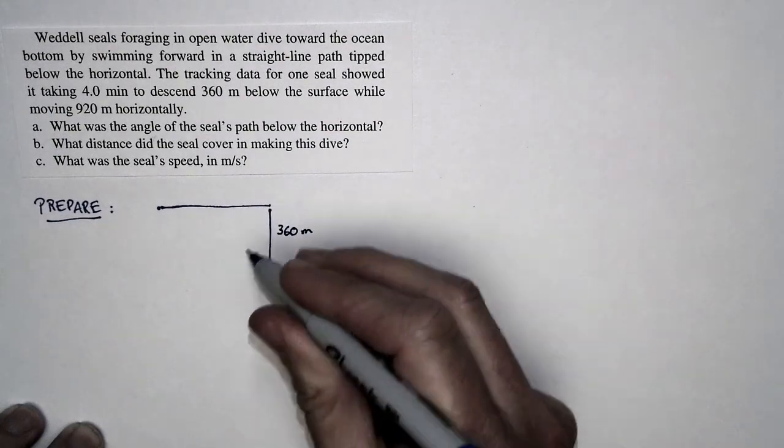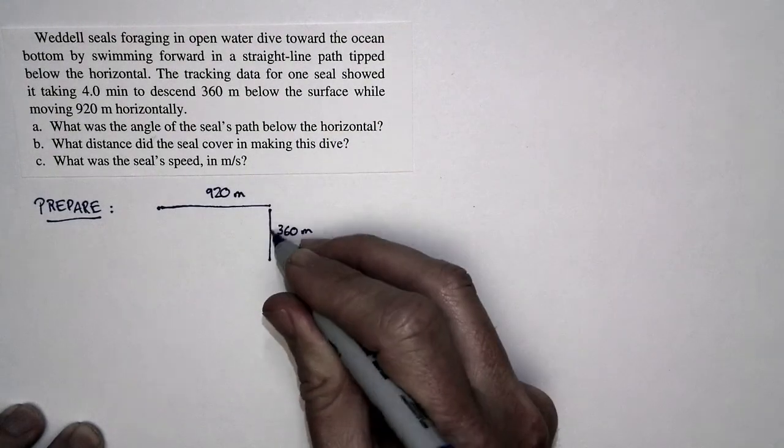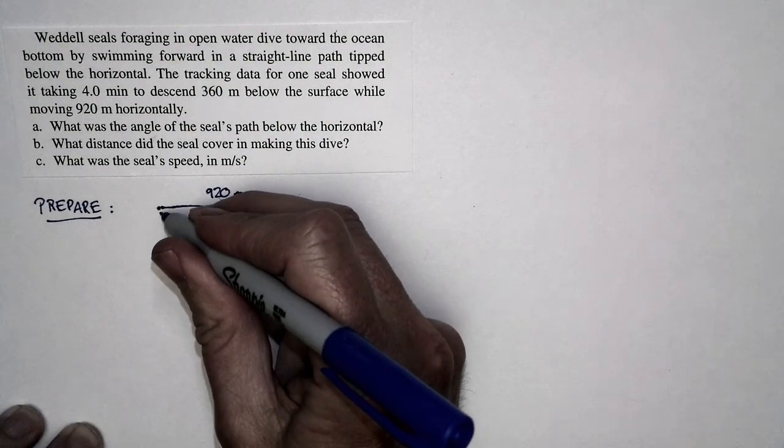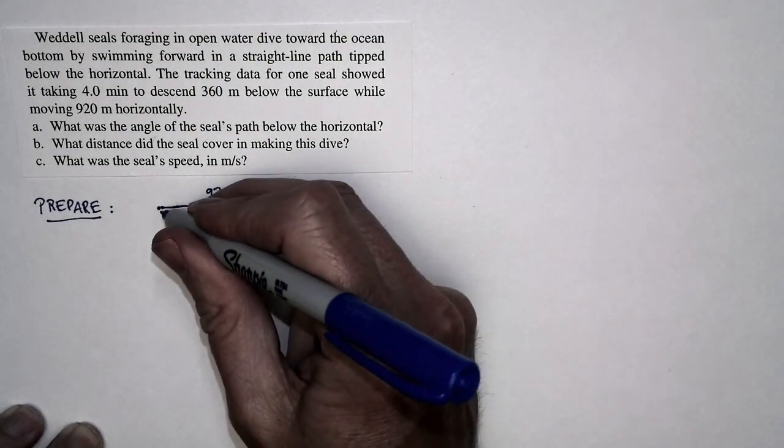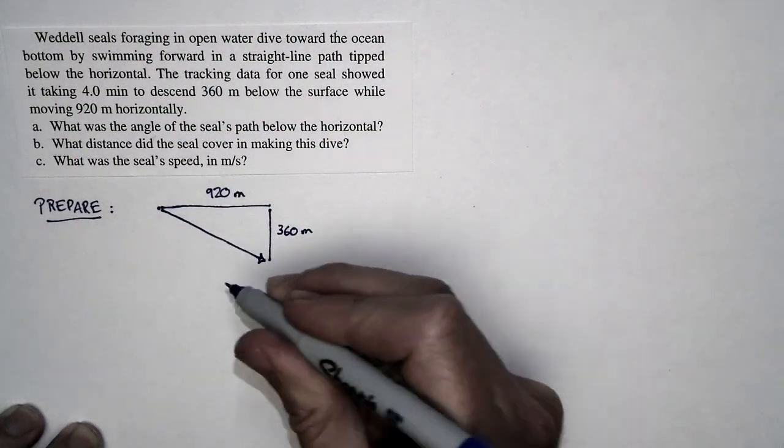The seal moves 920 meters horizontally and it drops 360 meters, but it does this on a straight line path. The straight line path goes like this. So this was the actual motion of the seal.